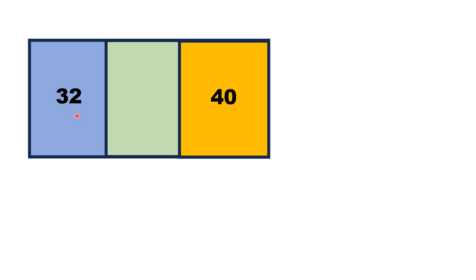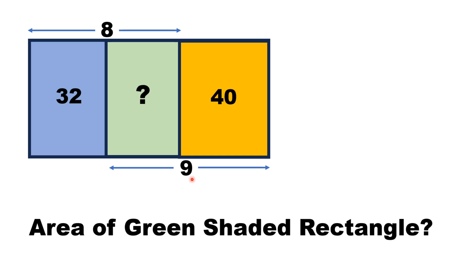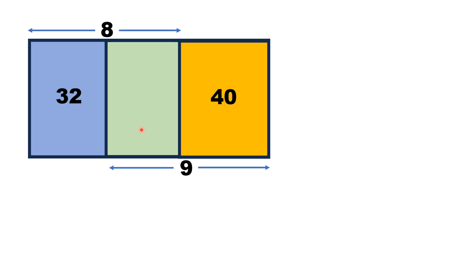Hello everyone. In this video, a rectangle is divided into three portions: blue, green, and yellow. The area of the blue region is 32 square units, the yellow is 40 square units, while the length of the blue and green rectangles combined is 8 units, and the length of the green and yellow rectangle is 9 units. Using this limited data, we have to find the area of the green shaded rectangle.